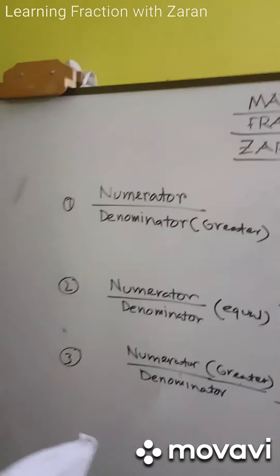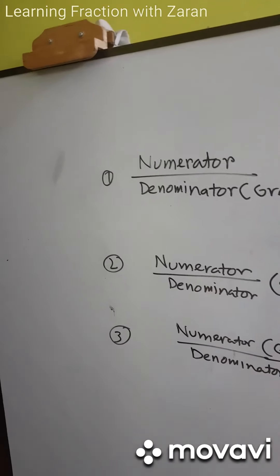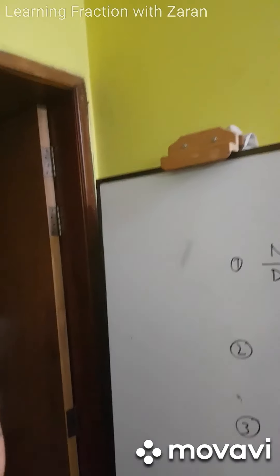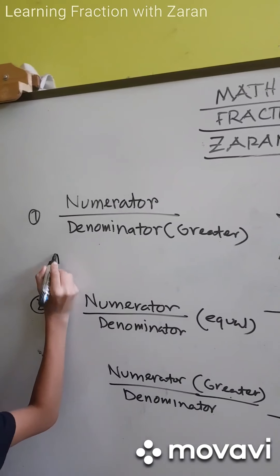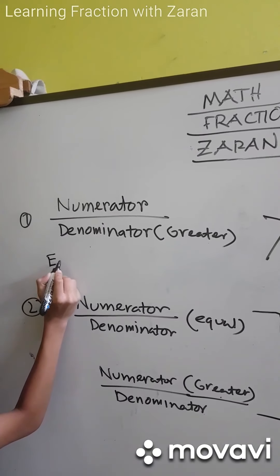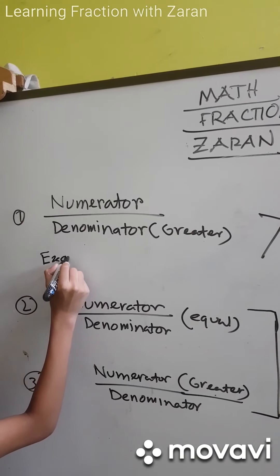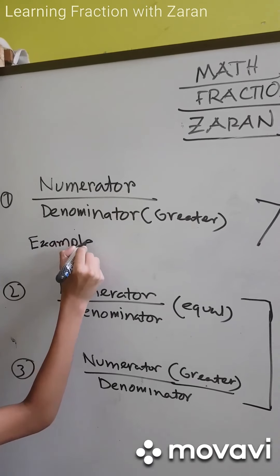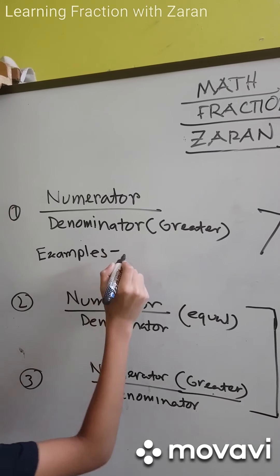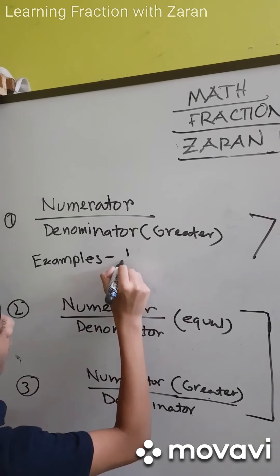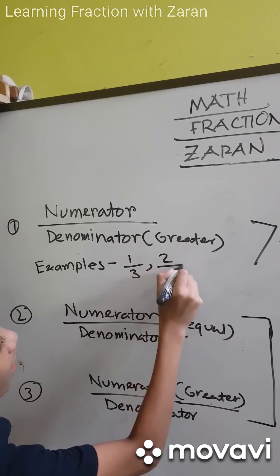For example, 1 by 3 and 2 by 3 are proper fractions.